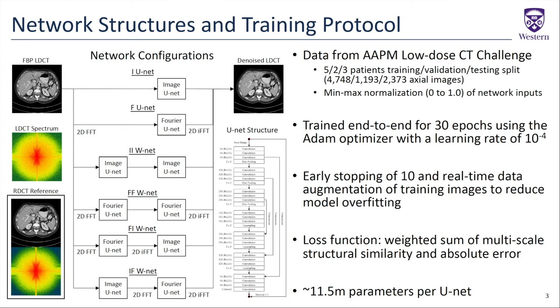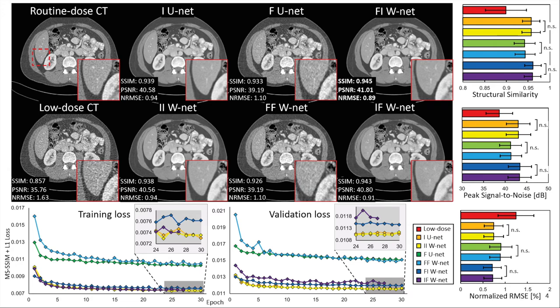Each U-net contained approximately 11.5 million parameters. The figure on the top left shows an example of the denoising performance of each of our six approaches. We see qualitatively that noise was suppressed using any of our tested approaches, but the frequency-domain-only networks produce coarse textures that reduce confidence in diagnostically reading the image. The image-domain-only and dual-domain approaches produced similar qualitative results, with the FI-Wnet producing slightly sharper results.